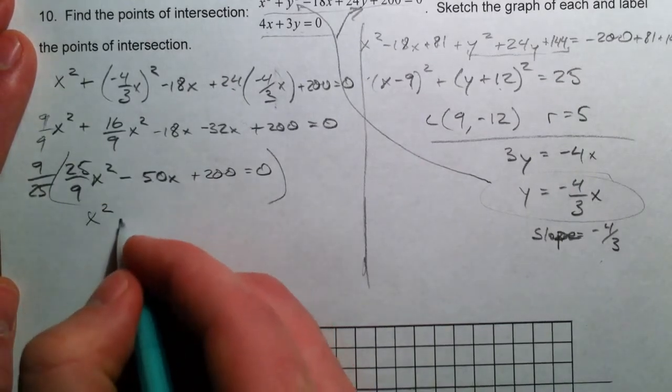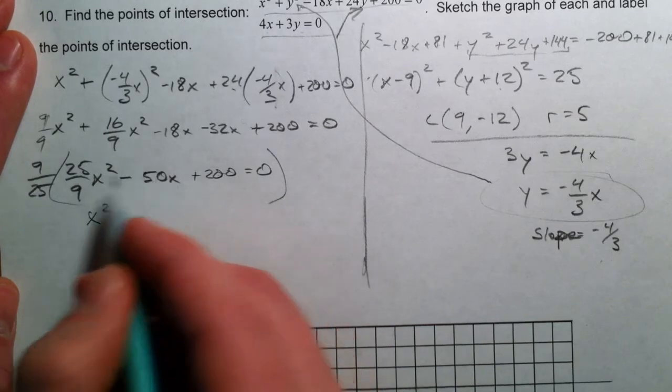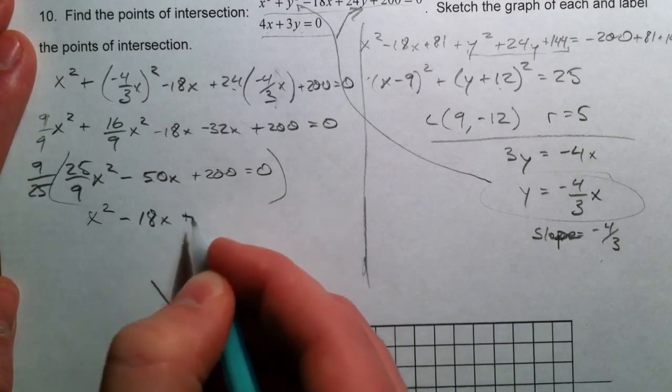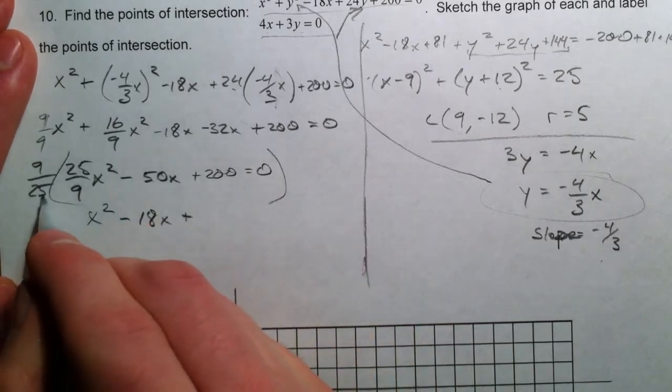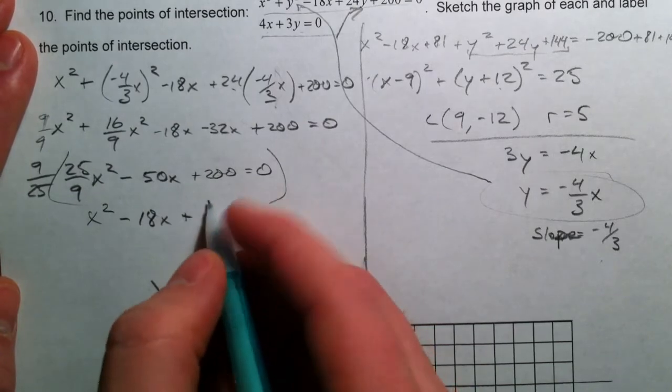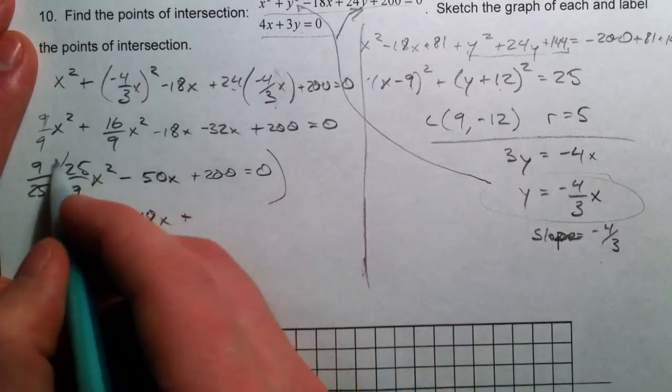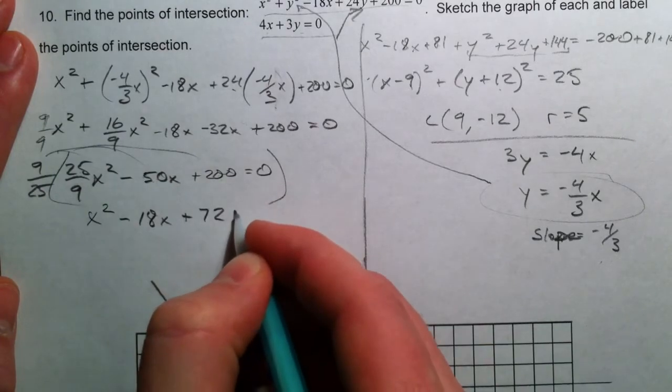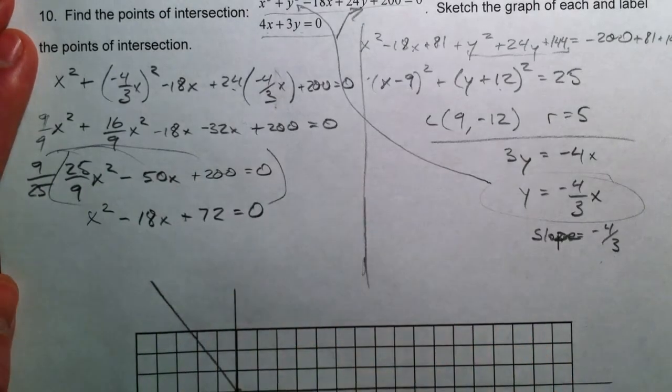So, 9 over 25 cancels out there. 50 over 25 is 2. So, we get 18x. 200 over 25. Well, 100 is 4 times 25. So, that's 8 times 9, 72.